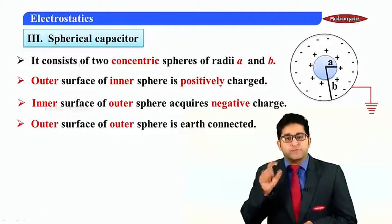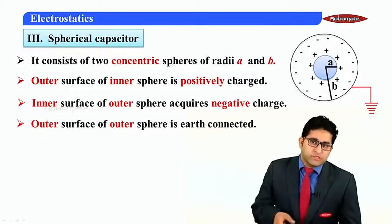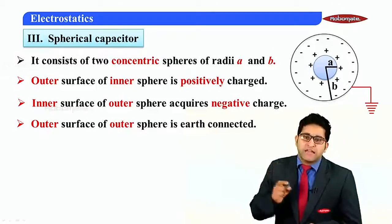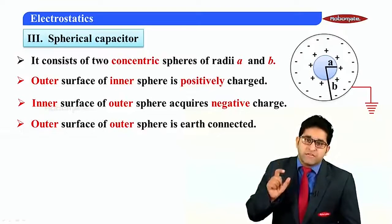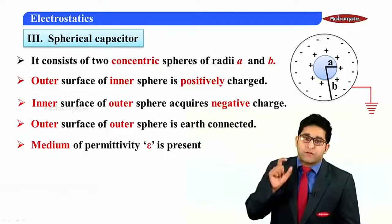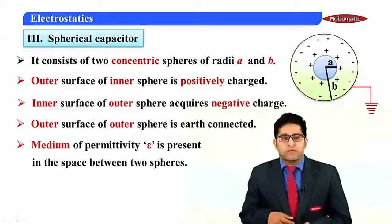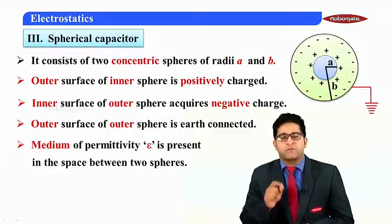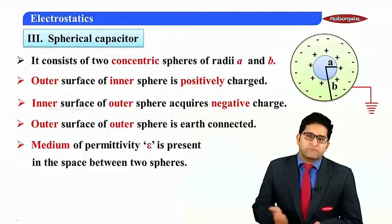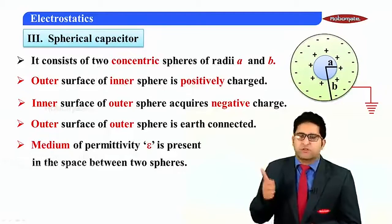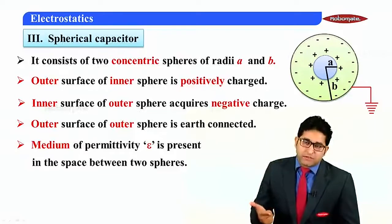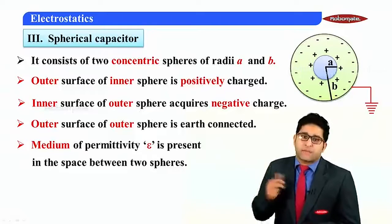There is a space present between the two spheres, and this space is filled with a dielectric medium having permittivity epsilon or dielectric constant K. So, we have now learned all three types of capacitor: the parallel plate capacitor, the cylindrical capacitor, and the spherical capacitor.